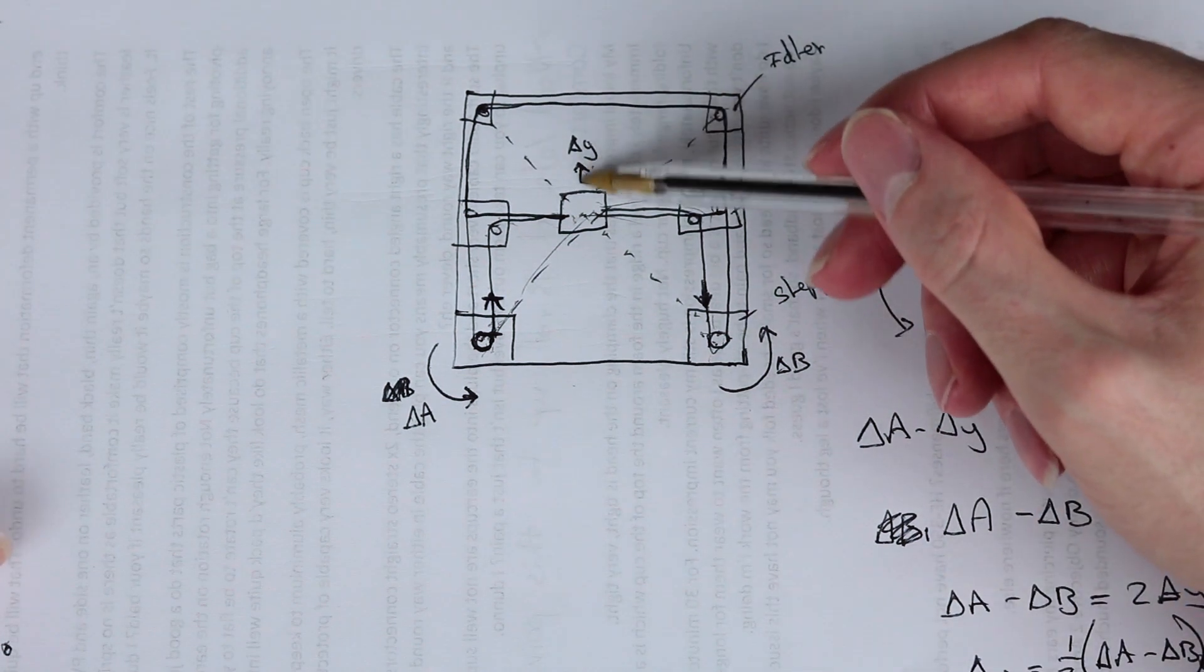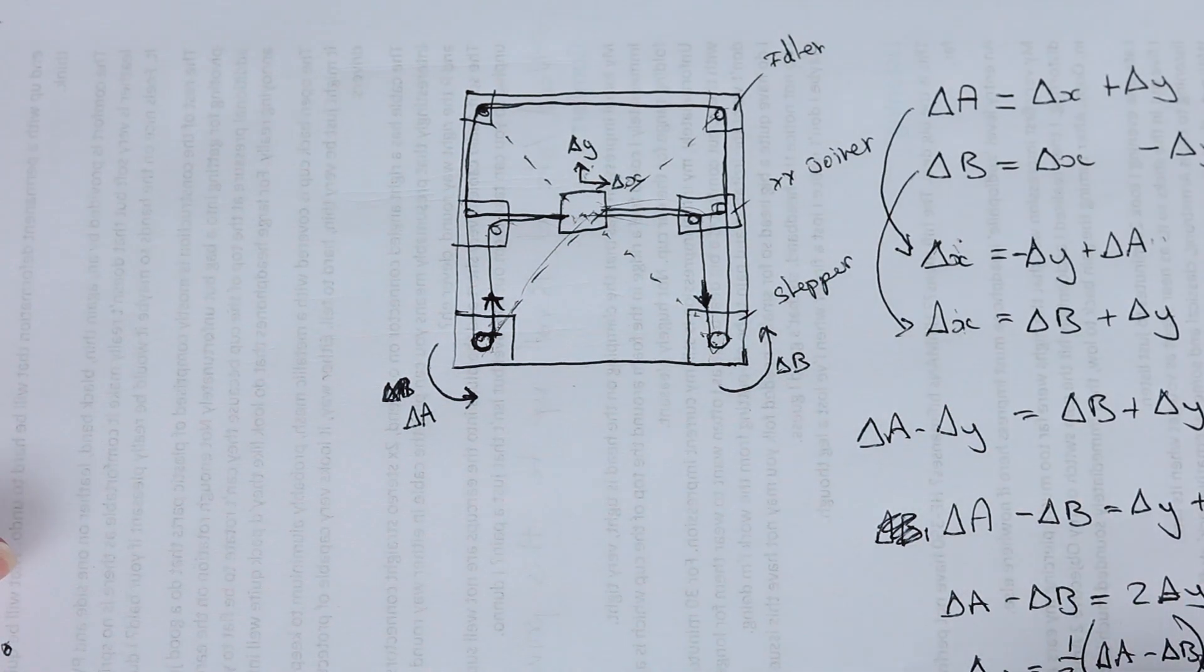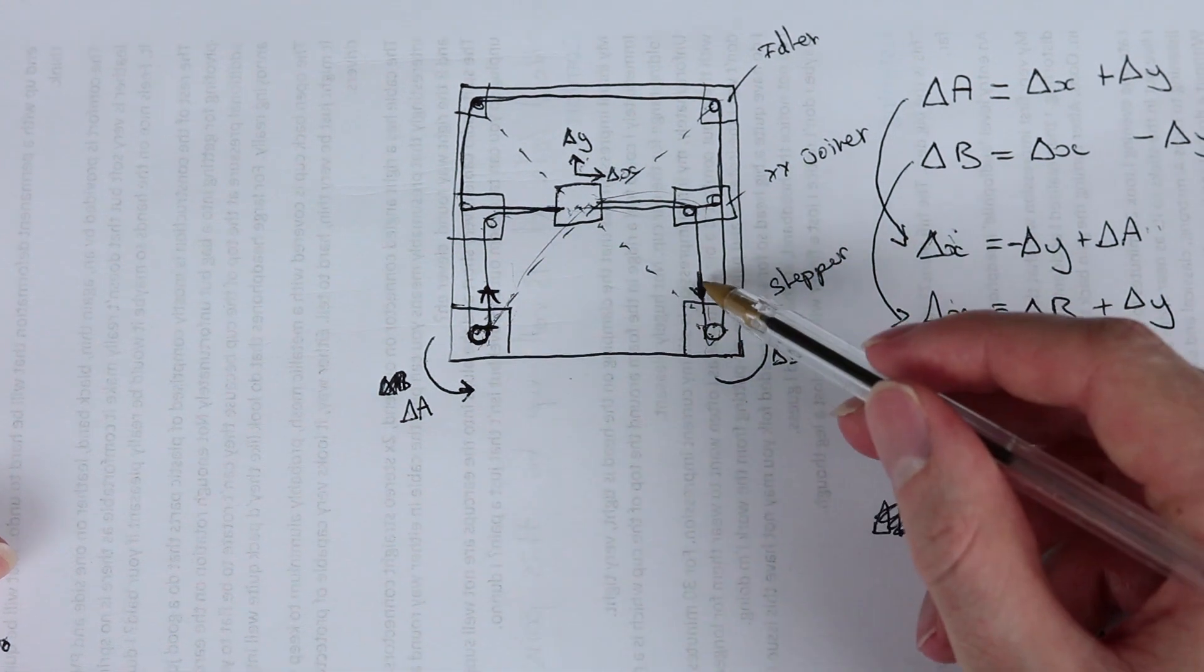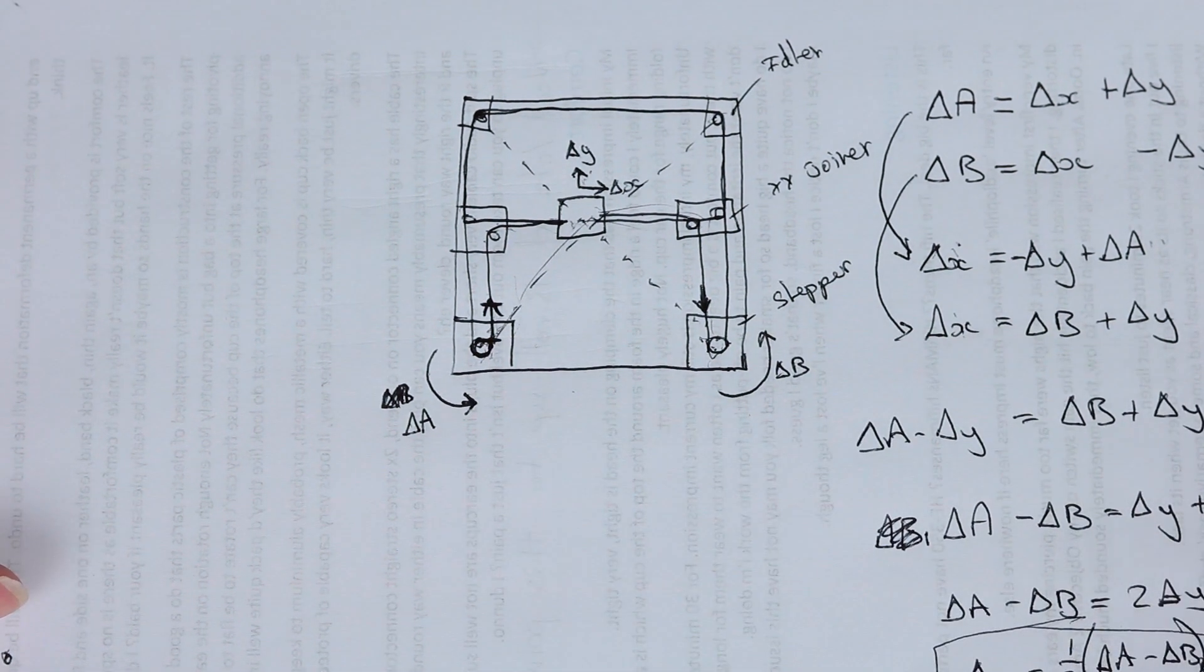So to get a change in Y, we have half the motion of A's positive motion minus B's motion. So that's how we get a delta Y.